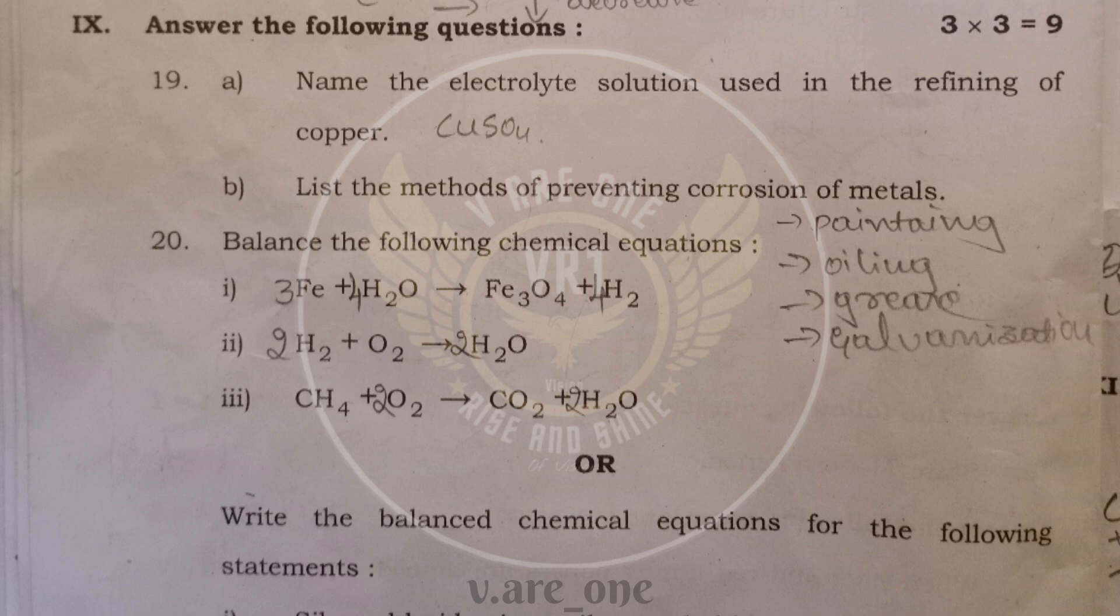And 19th question, name the electrolyte solution used in the refining of copper. It is copper sulfate, CuSO4. And next, list the methods of preventing corrosion of metals. First one is painting. Next, oiling. Applying grease and galvanization. Next, balancing equations. You need to balance. Then, you have to write the chemical equations.